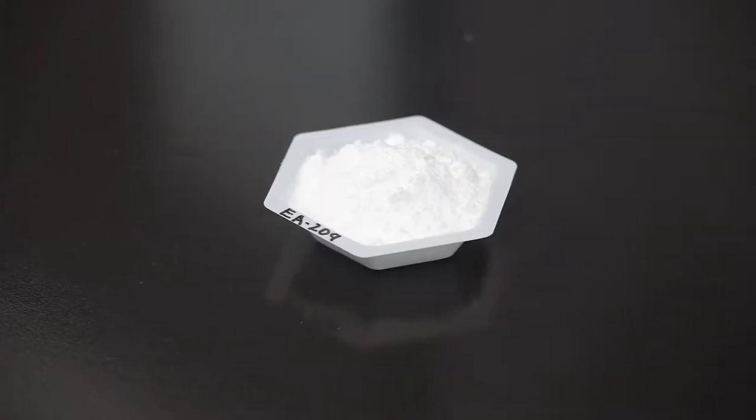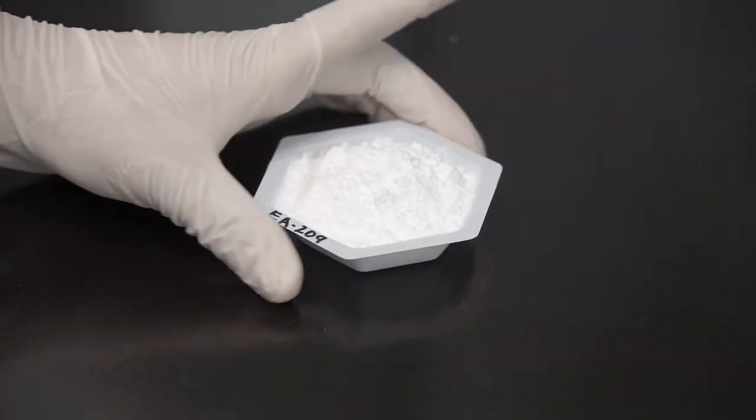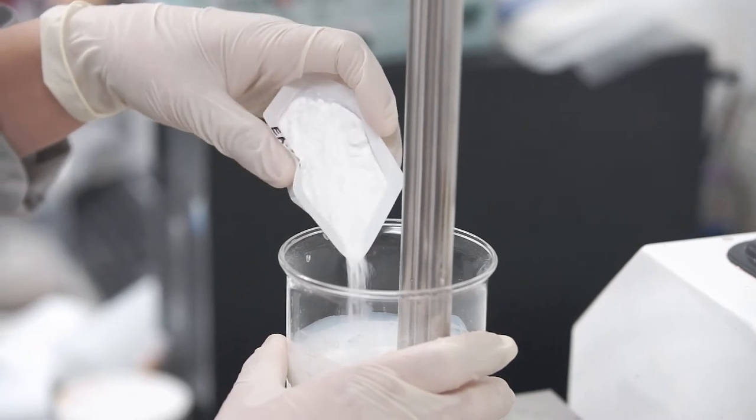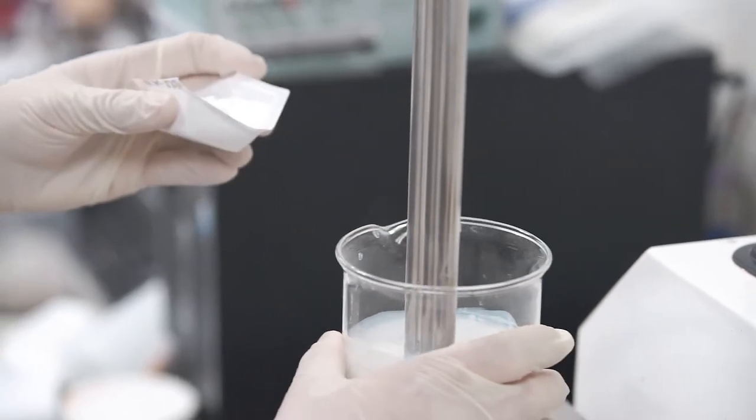Next we move on to part 3. We will add in EA-209, Kobo's ethylene acrylic acid copolymer, and mix well until batch is homogeneous.